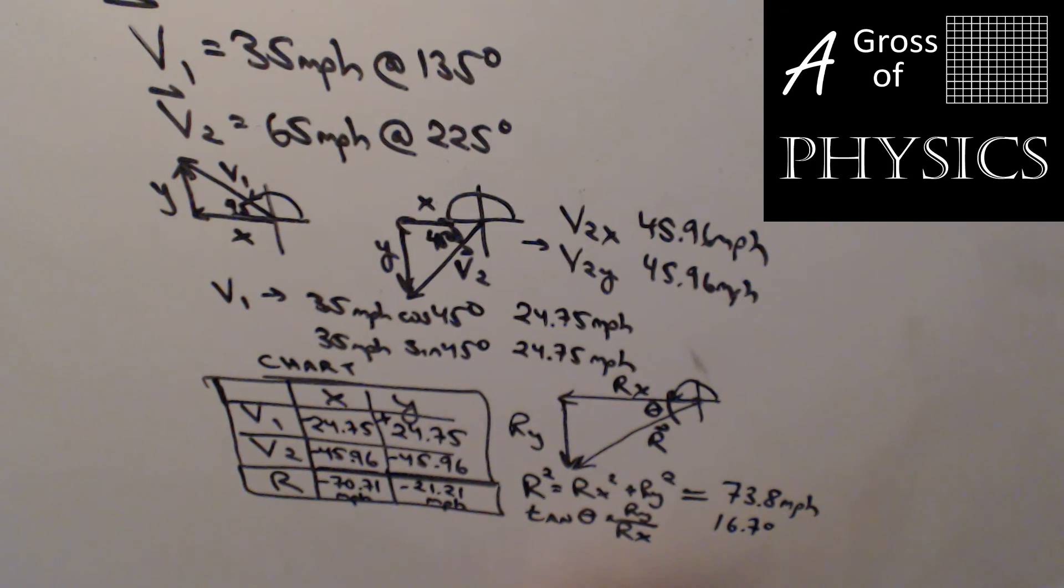So to put this together, I'm going to say r equals 73.8 miles per hour at, and as we said before, it's 180 plus 16.7, and we have 196.7 degrees. So our final resultant, let's put a hat on, is 73.8 miles per hour at 196.7 degrees.